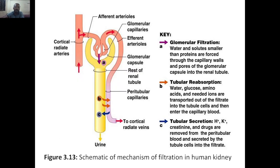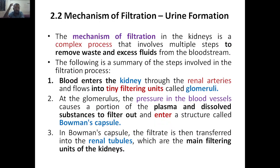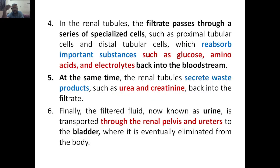That was about the mechanism of urine formation. Six steps are there. First step: blood enters the renal arteries and flows to tiny glomeruli where filtration occurs. Then plasma and dissolved substances are filtered in the Bowman's capsule. Then the renal tubules — a series of renal tubules acting as main filtering units — where filtration occurs. Proximal tubule reabsorbs, and the distal tubule gives back the reabsorbed molecules — glucose, amino acids, electrolytes — to the bloodstream. Then urea and creatinine are given back from the bloodstream to the renal tubule as waste. Finally, urine is formed because of urea and waste fluid, and given to the bladder.